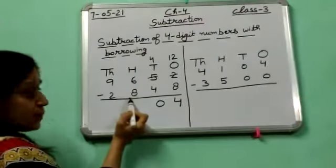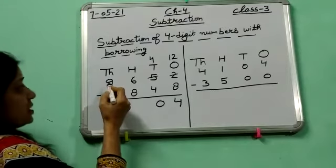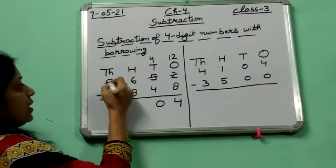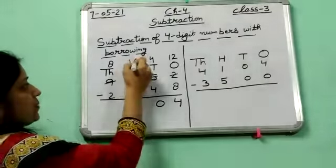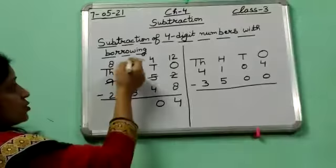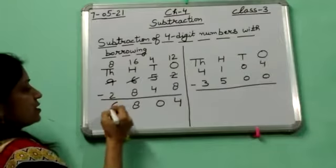Now again we can't subtract 8 from 6. So we have to borrow from 1000's place. So we borrow from here, here it becomes 8, and if we borrow it becomes 16. So 16 minus 8 is 8, and 8 minus 2 is 6.